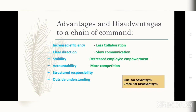Next is slow communication. For example, if you are being stressed or oppressed in your unit, you cannot directly report to the CEO. It must be channeled according to the chain of command — whoever is the next superior or next in command before you reach the CEO must also be informed. That is one of the disadvantages: slow communication. Next is decreased employee empowerment, and more competition. Those are the advantages and disadvantages of chain of command.